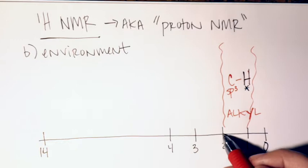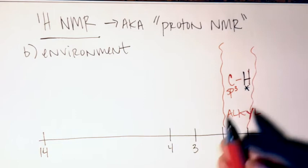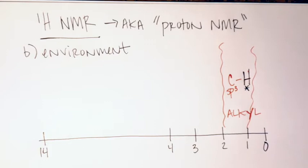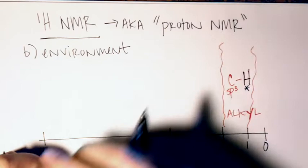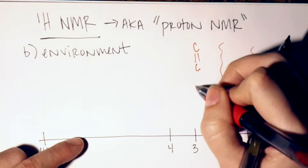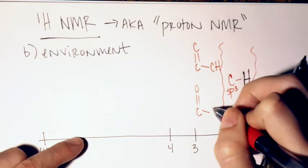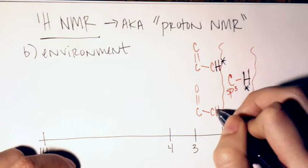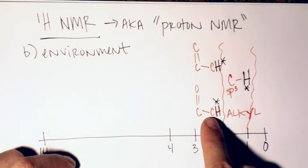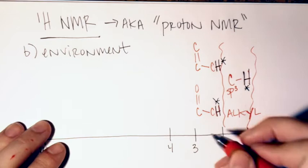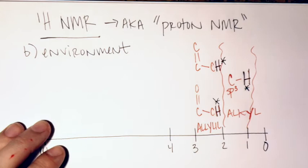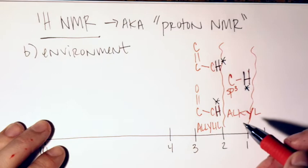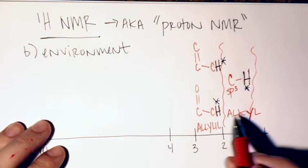Once you start moving more downfield, you're attaching stuff to these carbons that will slightly deshield the hydrogen environment. In the two-to-three region, you get carbons that are beta to double bonds — if you have a C=C or C=O double bond, the hydrogen over on the beta carbon is in the allylic position. It's not on an SP2 carbon; it's adjacent to an SP2 carbon. That slightly deshields it compared to a regular SP3 carbon.